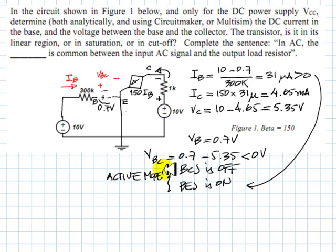That answers most of the questions of this exercise. We have computed the current in the base, 31 microamps, and we have computed the voltage between the base and the collector. Now, complete the sentence.